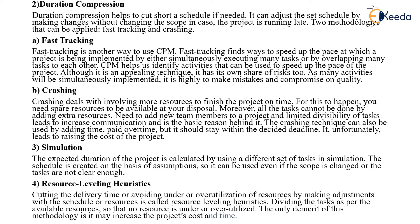The second one is Duration Compression. It helps us to cut short a schedule when needed. It can adjust the schedule by making changes without changing the scope in the case the project is running late. The two methodologies used are fast tracking and crashing. Fast tracking is another way to use the CPM — it finds ways to speed the pace at which a project is being implemented by either simultaneously executing many tasks or by overlapping many tasks with each other.